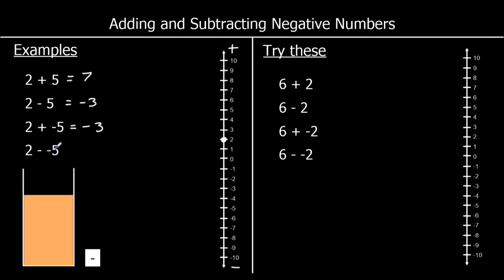For the last one, 2 minus a negative 5 — starting at 2, going down the number line, but by negative 5 spaces. Going down by negative 5 spaces means I actually go up 5 spaces, and that gives us 7.